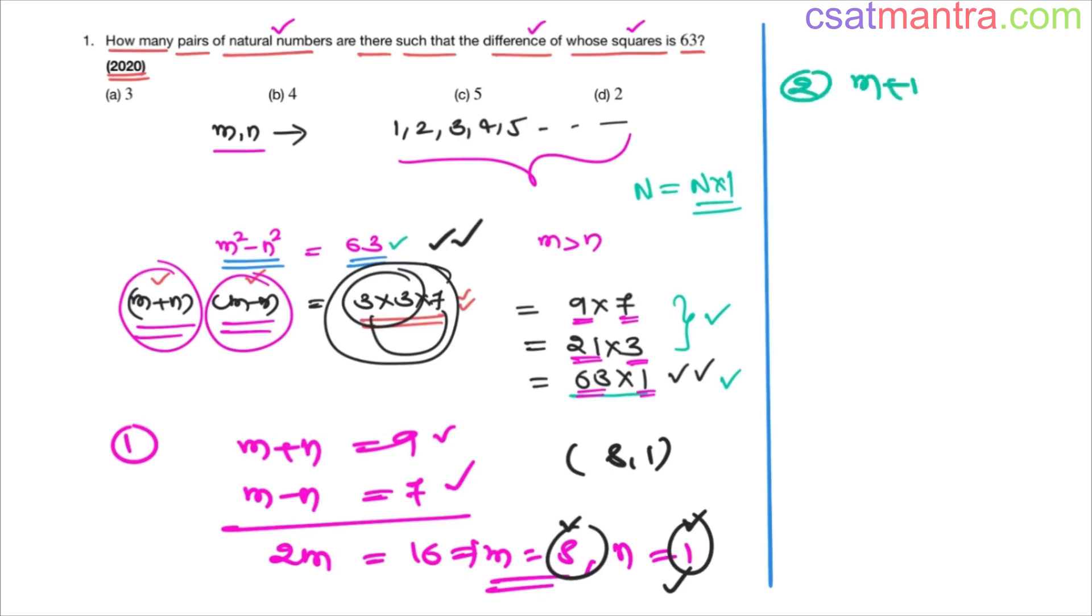Second case, m plus n equals 21, m minus n equals 3. 2m is equal 24, m equals 12. n in that case 9. So 12 comma 9, this is also another possibility.